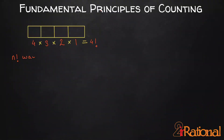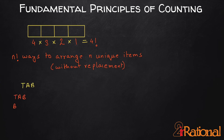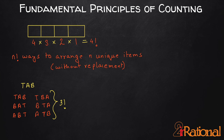Hence, we say that we have n! ways to arrange n unique items without replacement. For example, there are 3! ways to arrange 3 letters to form 3-letter words, or 15! ways to arrange 15 students in a queue.